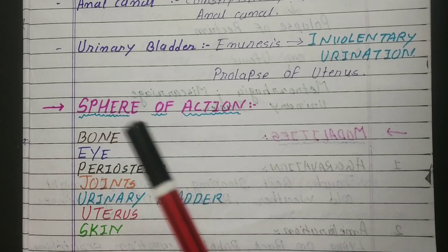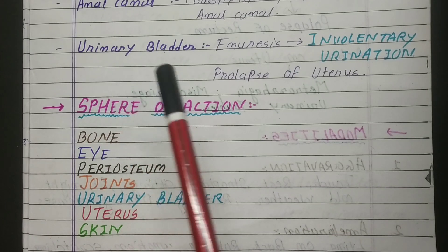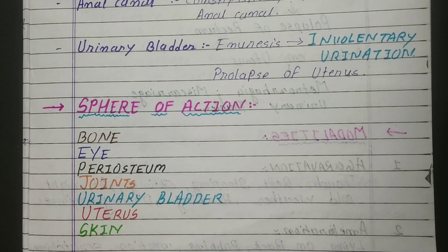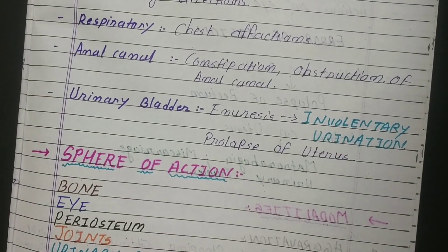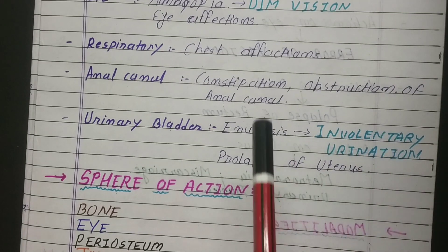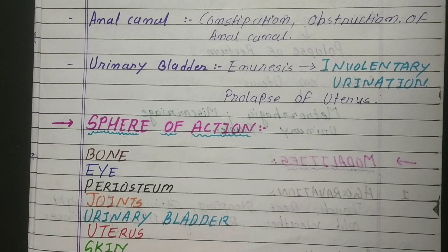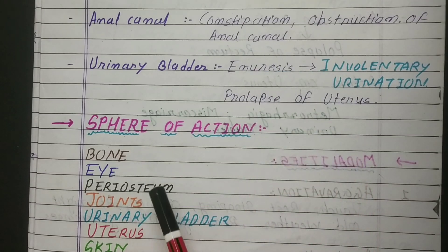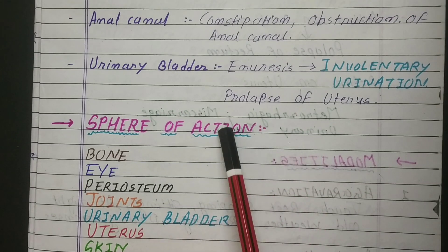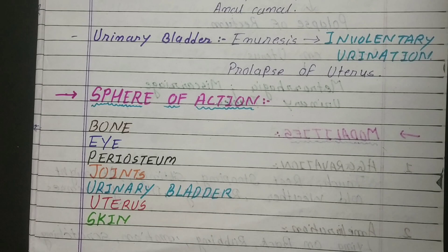If you write the clinical section in this organized way, your impression in the exam will be better. Also, from the way I have written clinicals, you can easily write the sphere of action. As we saw first: bones — so first write bone in sphere of action. Then eye — write eye in sphere of action. Then periosteum, which is the covering of bone, one type of layer over the bone. Then joints — since rheumatism is there, action on joints. Then urinary bladder — as seen, Ruta is indicated for urinary bladder diseases. Write uterus — as prolapse of uterus is listed. And also write skin — Ruta has action on skin too.